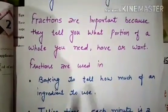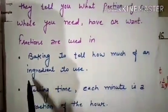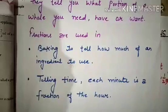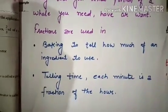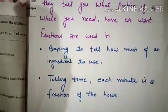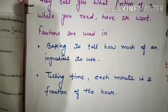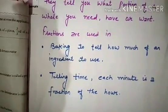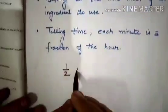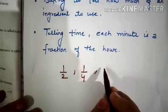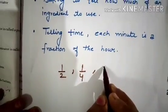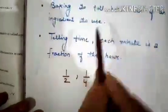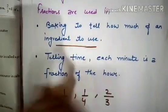Fractions are used in baking to tell how much of an ingredient to use. Mostly fractions are used to cook some food. For example, how much teaspoon of salt you require — sometimes we need half a teaspoon, sometimes just 1/4 of a teaspoon. That means 1 by 2 is half teaspoon, 1/4th teaspoon, or 2/3rd cup of curd. This Fraction is used to bake or cook some food — to measure ingredients.